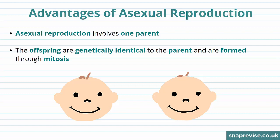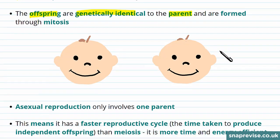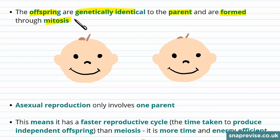Organisms make more of themselves through either asexual or sexual reproduction, but both of these have costs and benefits associated with them. Now I'll go through the advantages of asexual reproduction. Asexual reproduction involves only one parent, and the offspring created are genetically identical to the parent, and these are formed through mitosis. This means that the offspring is a clone of the parent.